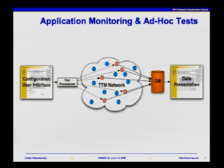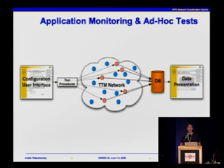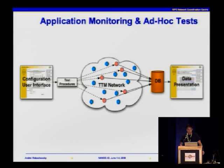What I told you so far was about the traditional TTM network. What we are doing right now is introducing so-called ad-hoc tests and ad-hoc experiments, which are intended to transform TTM into a general-purpose measurement platform. It basically allows you to measure something beyond just connectivity and packet loss — it allows you to measure performance of certain applications. The idea is to define a plug-in or test procedure using a user configuration interface, deploy this test procedure in the TTM network, do the measurements, collect them, and present results as desired. A practical example is measuring a web application and how it's seen from the TTM network.